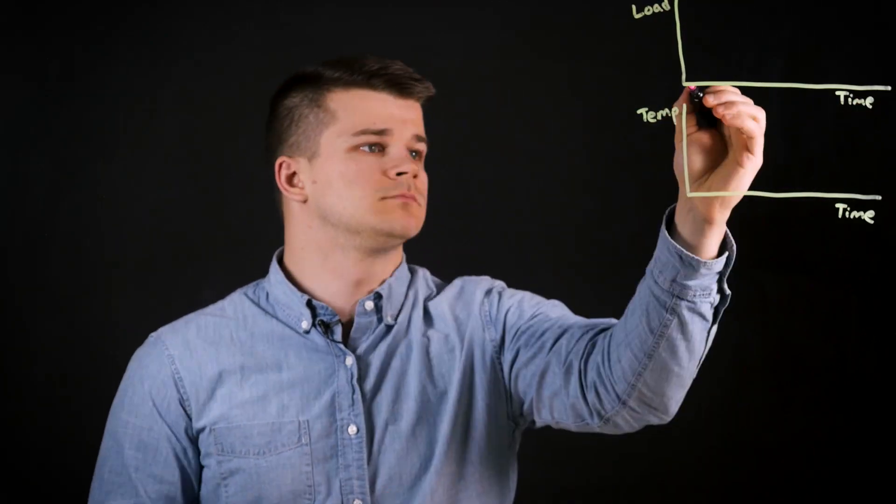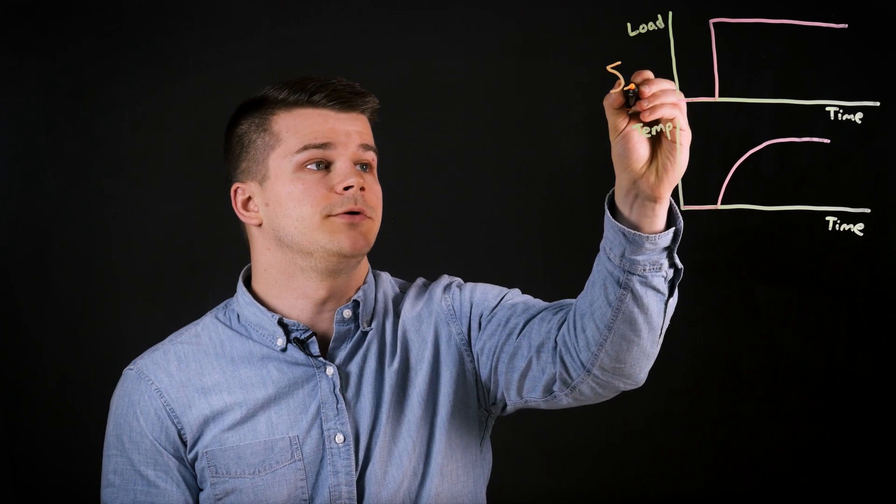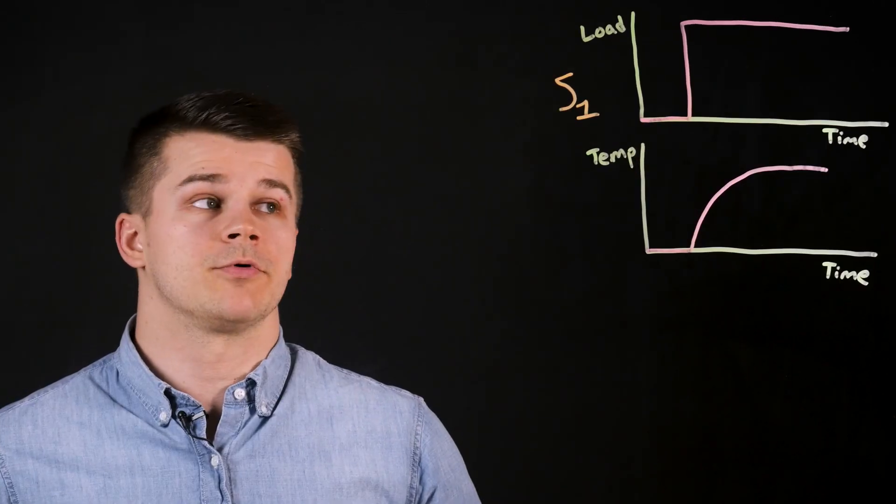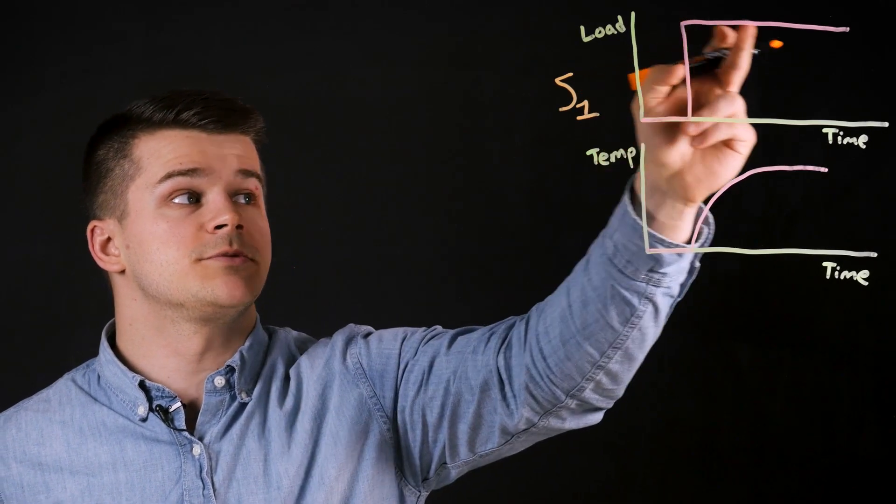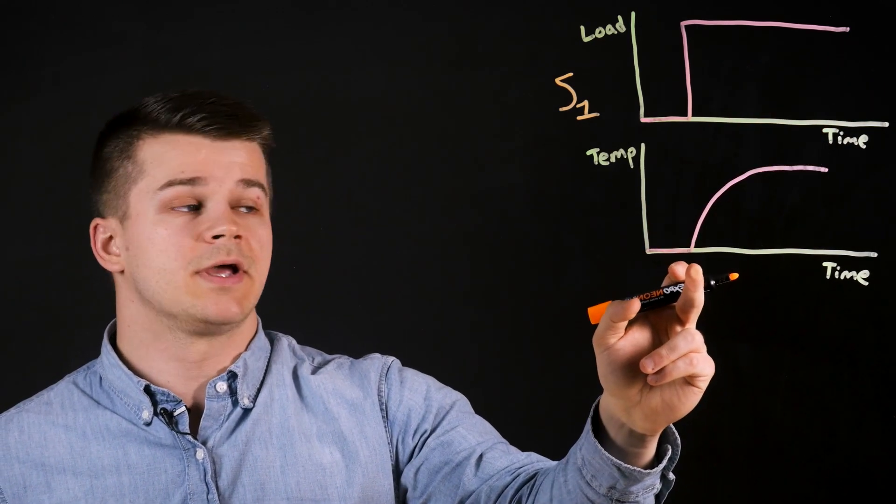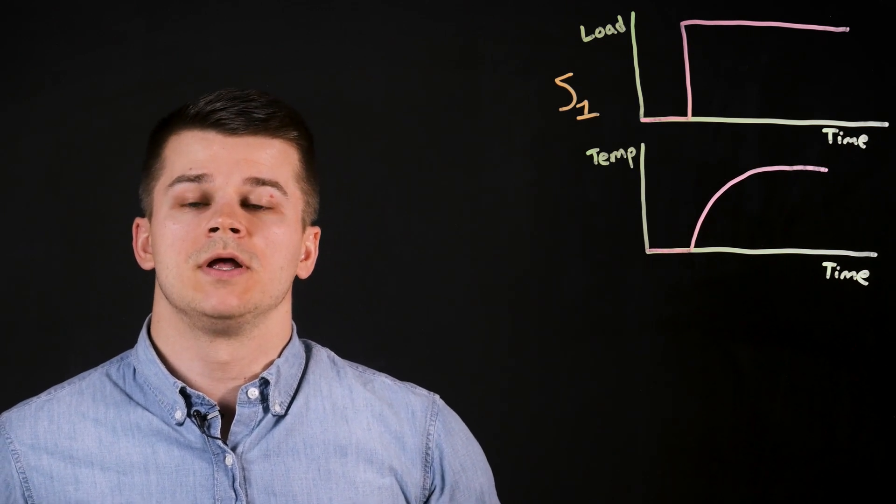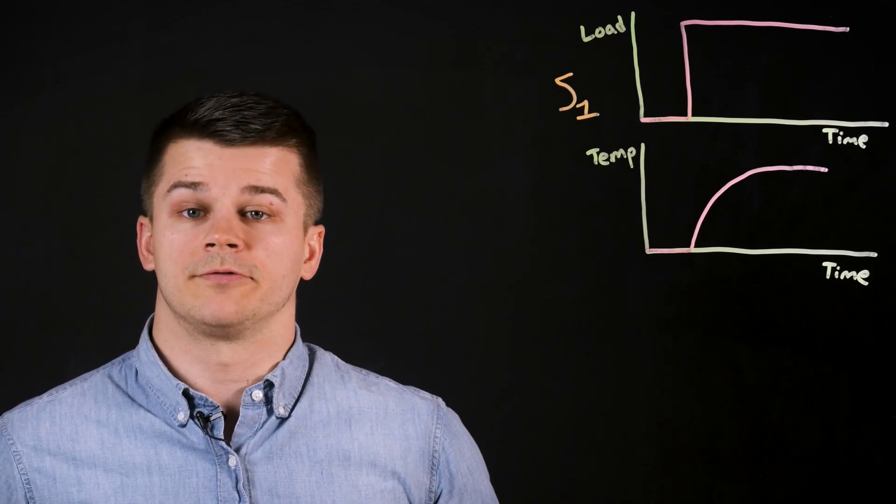The first motor duty cycle we'll talk about is continuous duty, also referred to as S1 duty. In this type of operation, a constant load is applied throughout the operation, and the temperature goes from ambient and is allowed to reach a constant temperature at the motor's thermal equilibrium. This is the simplest type of motor duty cycle.